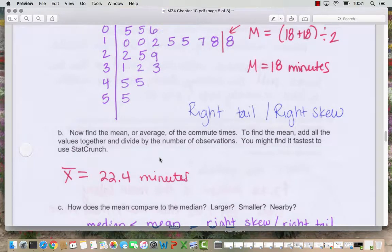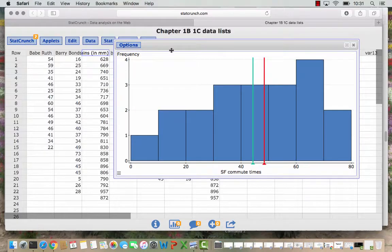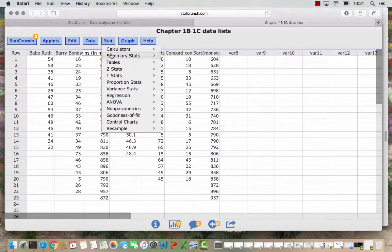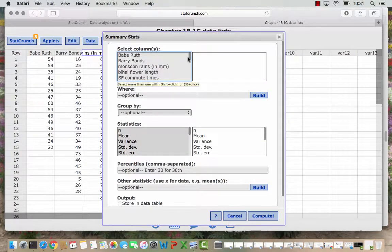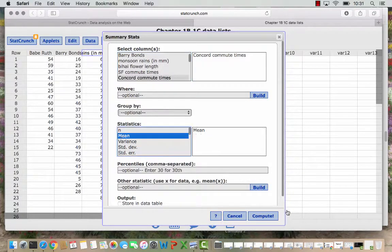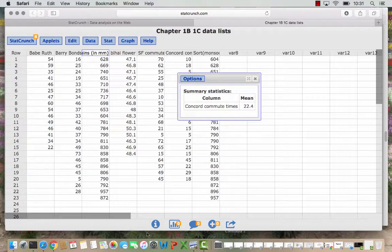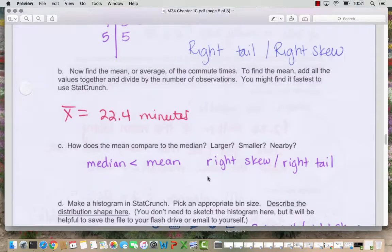So if we find the mean, we can go into StatCrunch and do that, we get 22.4 minutes. So we go to Stat, Summary Stats, Columns. We choose Concord Commute Times. And we want just the mean and compute. And there's our 22.4 minutes. So in this case the median is smaller than the mean. So the mean is pulling the tail out to the right. So we say we have a right skew or a right tail. Let's go double check this on the histogram.